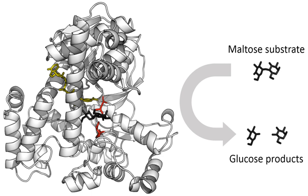Enzymes are not rigid, static structures; instead they have complex internal dynamic motions — movements of parts of the enzyme's structure such as individual amino acid residues, groups of residues forming a protein loop or unit of secondary structure, or even an entire protein domain. These motions give rise to a conformational ensemble of slightly different structures that interconvert with one another at equilibrium. Different states within this ensemble may be associated with different aspects of an enzyme's function. For example, different conformations of the enzyme dihydrofolate reductase are associated with the substrate binding, catalysis, cofactor release, and product release steps of the catalytic cycle.